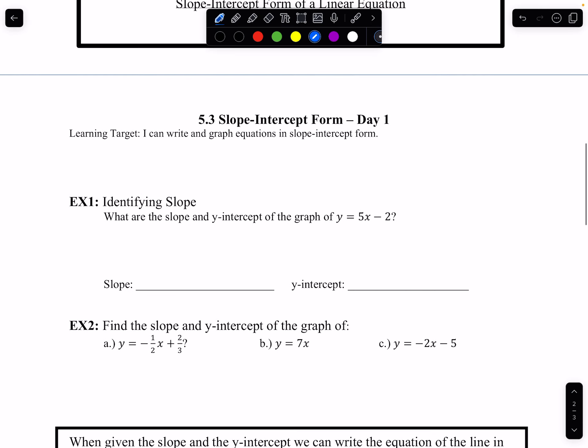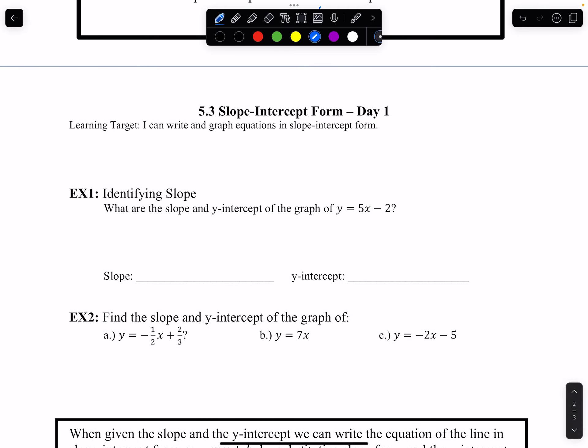Okay. So a learning target today is I can write and graph equations in slope-intercept form. So right now we're going to graph them and write them. So example one, let's first just focus on noticing what is the slope and what is the y-intercept. So we know that y equals mx plus b. This is the y-intercept. And this is the slope. So this is the slope. We'll put it m equals 5.